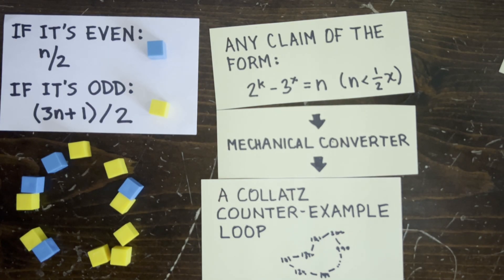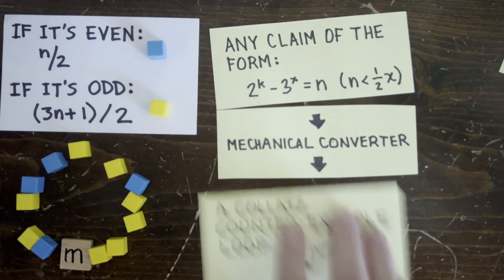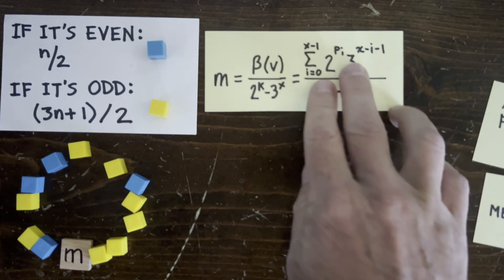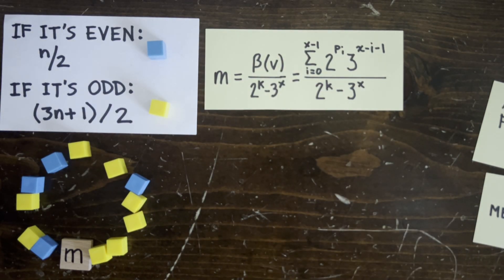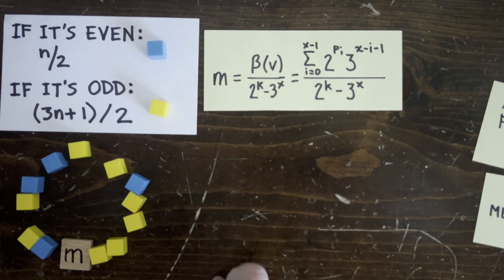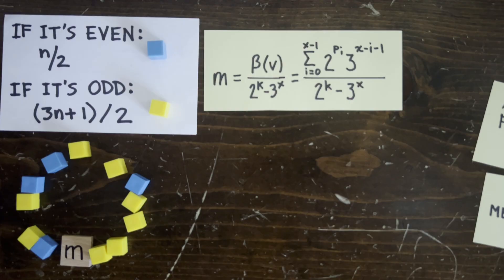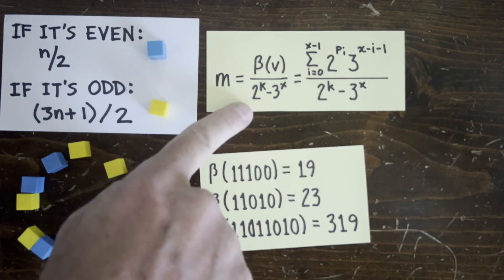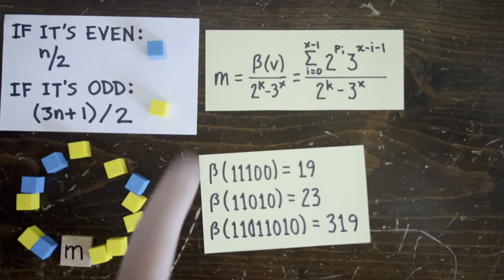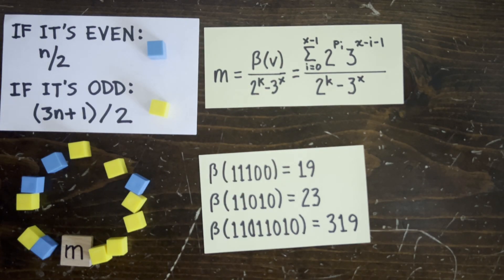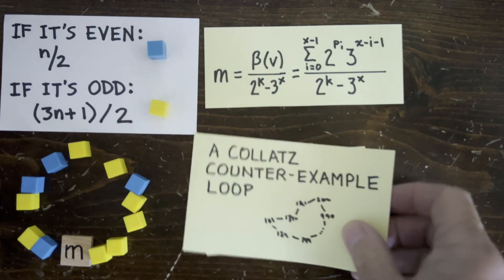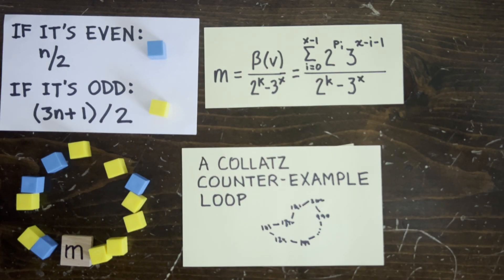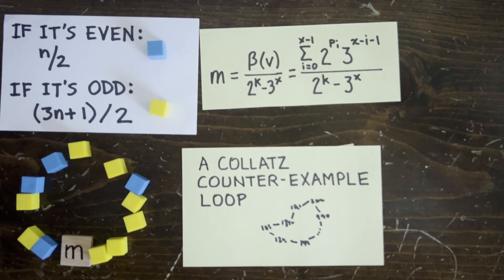It turns out that only one number m follows this sequence and loops back on itself. And here's the formula for m. It's kind of a hairy formula, but we've covered it a lot on this channel before. The main point is that beta v is a sum of products where a increases while b decreases. And here's some examples. 1 means up and 0 means down. Now, if beta v is a multiple of 2 to the k minus 3 to the x, then m is obviously an integer, so this is a real bonafide Collatz counterexample. And the reason no one's found such a counterexample is that m always seems to be a fraction, not an integer.